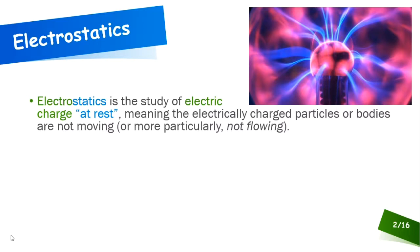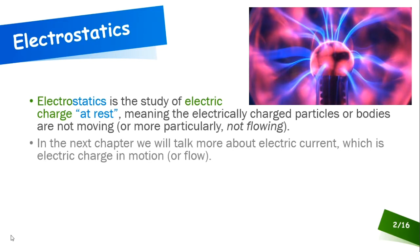Electro refers to the electric charge we're studying, and static means it's not moving — or in particular not flowing. Because with electricity, we're going to describe motion in terms of flow. In the next chapter we'll talk more about electric current, which is electric charge in motion or flow. Right now we're just going to look at electrostatics — the static charge you see on electrically charged objects.